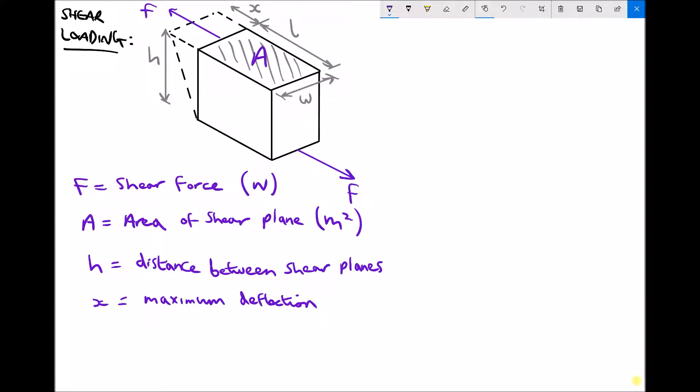Next, referring to the diagram, we have something called h or the distance between the shear planes. Because these two forces are offset a distance h, we end up with a shearing action. Any deflection that occurs is going to occur when the top surface is moved in the opposite direction to the bottom surface. If that distance h was zero, then no deflection would be able to occur.